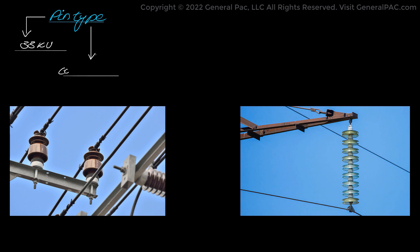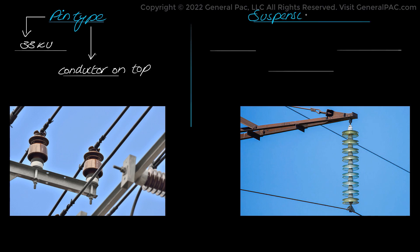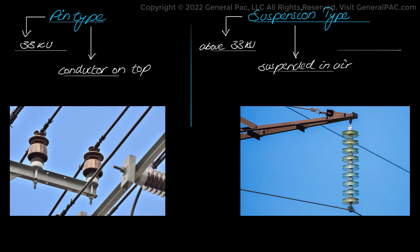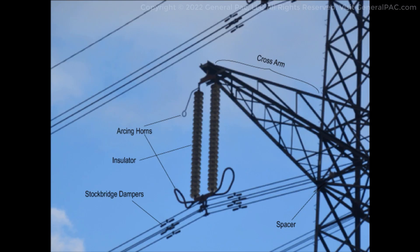Pin type insulators carry the conductors on their top and have structures consisting of sheds or petticoats, which prevent insulation leakage. Suspension type insulators are suspended and clamp the conductors from below. They consist of discs of porcelain, and up to 19 discs may be used for 400 kV lines. Cross arms are arms protruding from the tower to carry the conductor at a certain distance apart, and the insulators are attached to the edge of these cross arms.